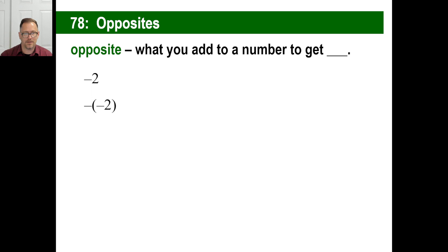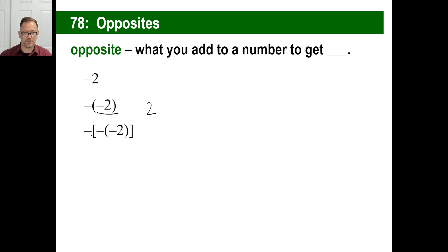Now look at this — this is the opposite of the opposite of two. Well, this part right here is the opposite of two. The opposite of the opposite of two is just back to two. How about this one? The opposite of the opposite of the opposite of two — that's going to be negative two. Then the opposite of that is positive two. Then the opposite of positive two is negative two again.